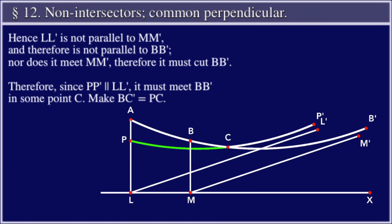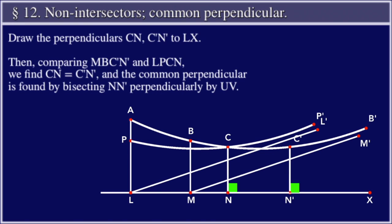Make BC' equal to PC. Draw the perpendiculars CN, C'N' to LX. Then, comparing MB'C'N' and LPC'N', we find CN equal to C'N', and the common perpendicular is found by bisecting NN' perpendicularly by UV.